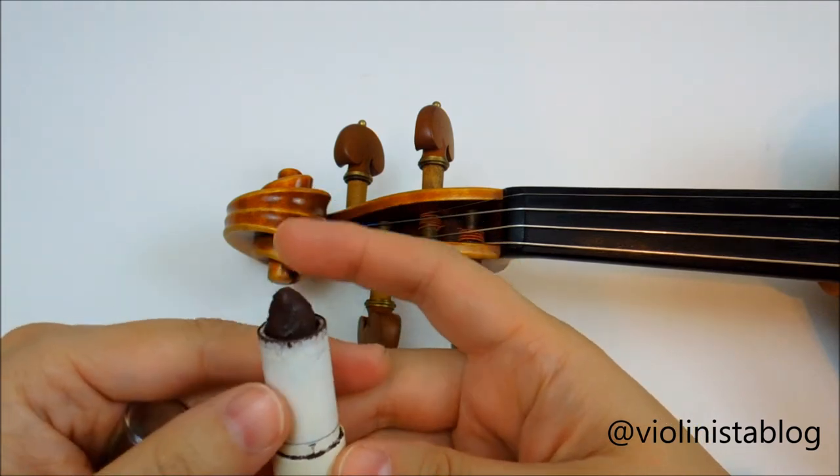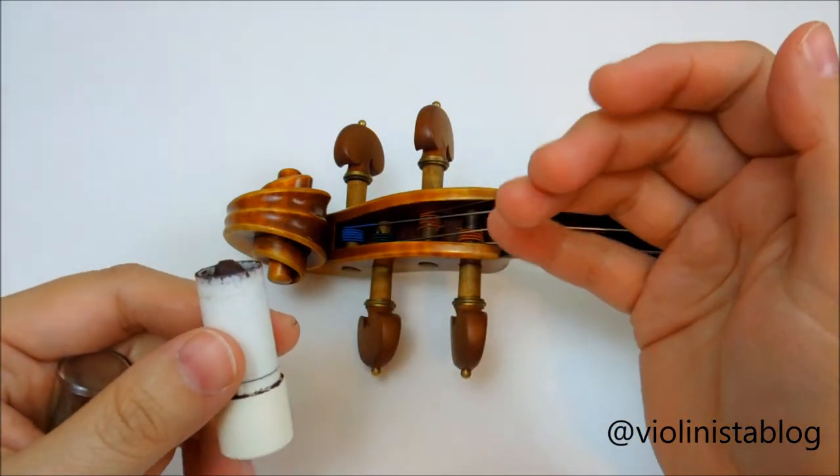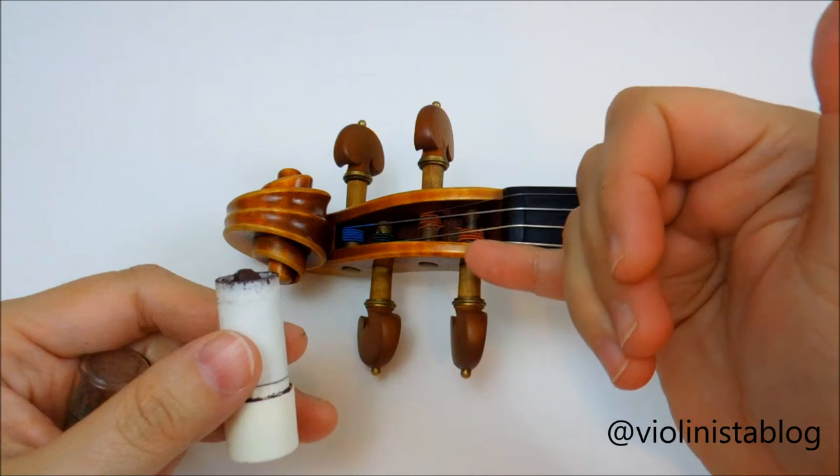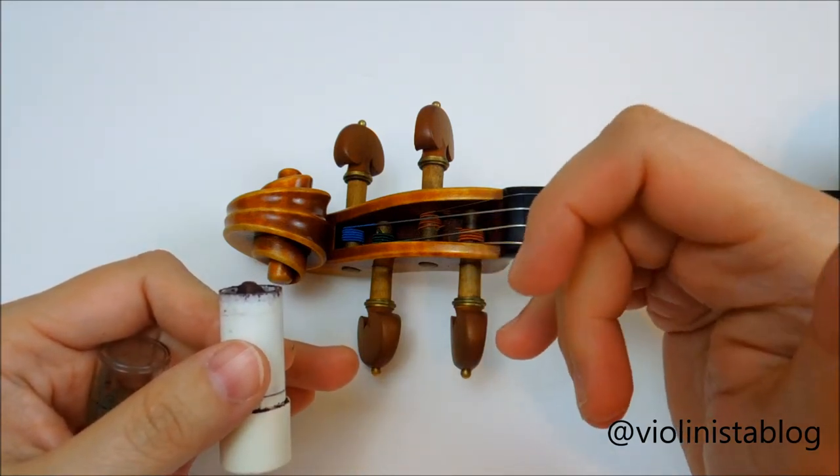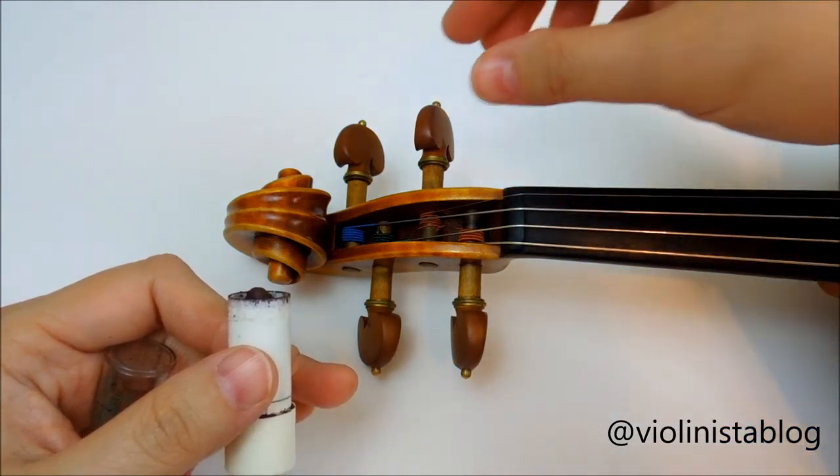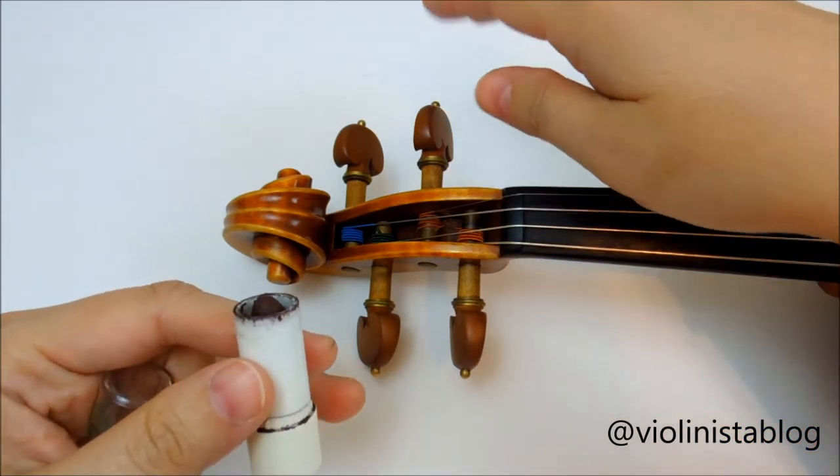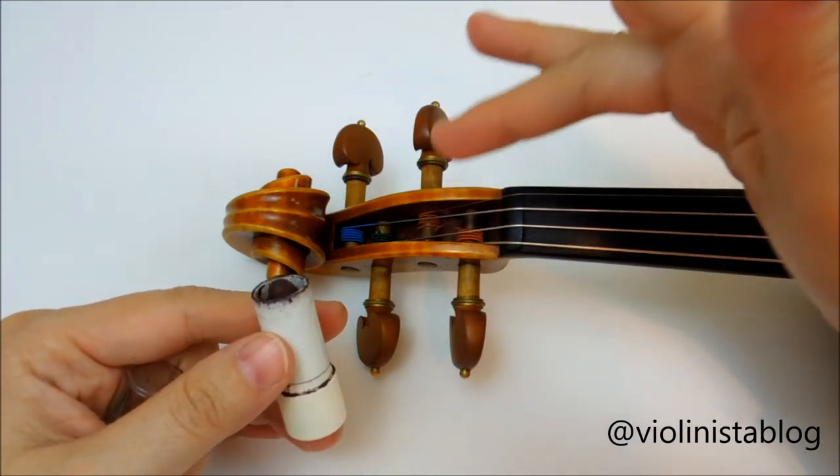So what does it do for your pegs? It helps maintain smoothness. If you ever get to the point that your pegs are sticking or giving you a cracking sound as you're trying to turn them, that means they're either not properly fit into the peg box or you need to lubricate them.